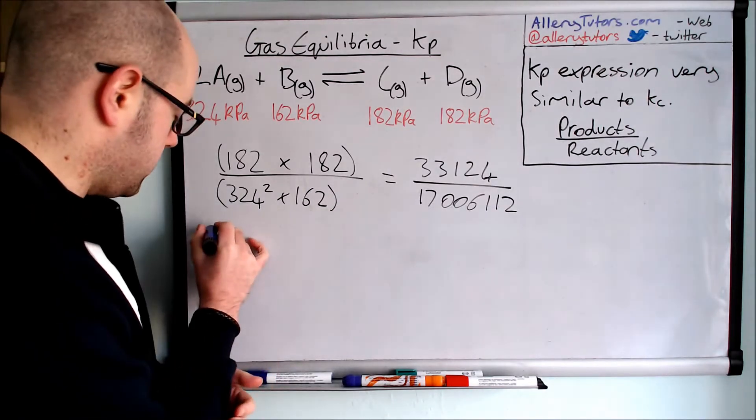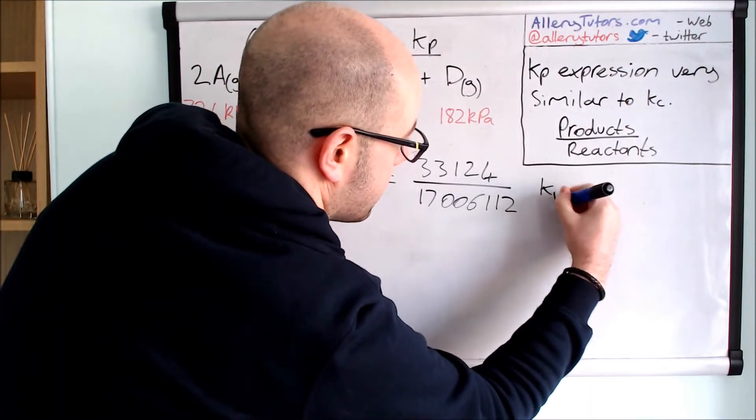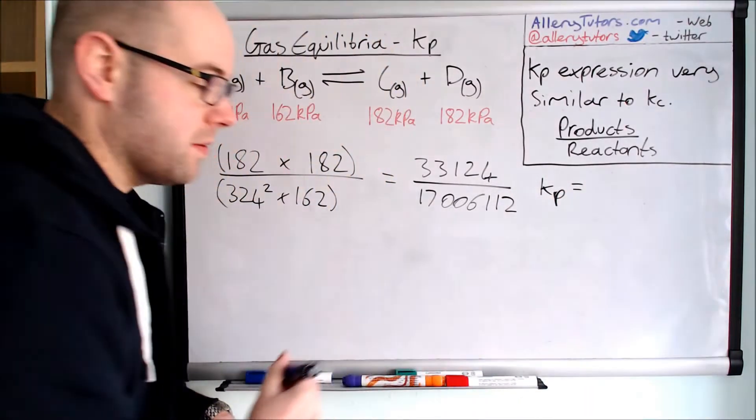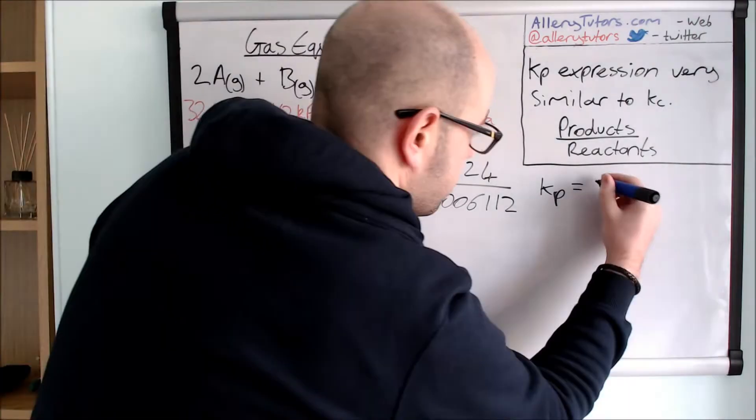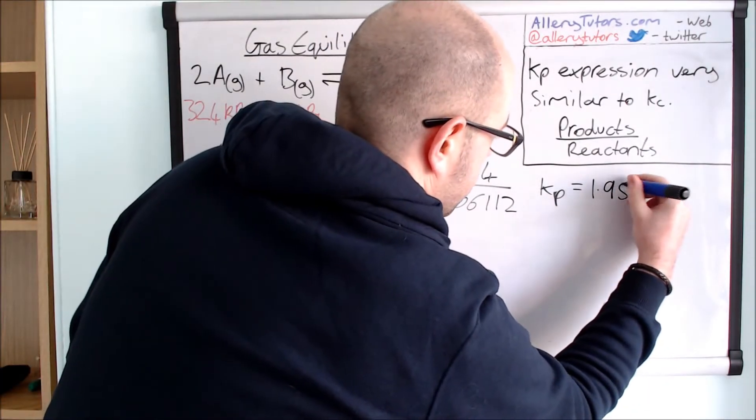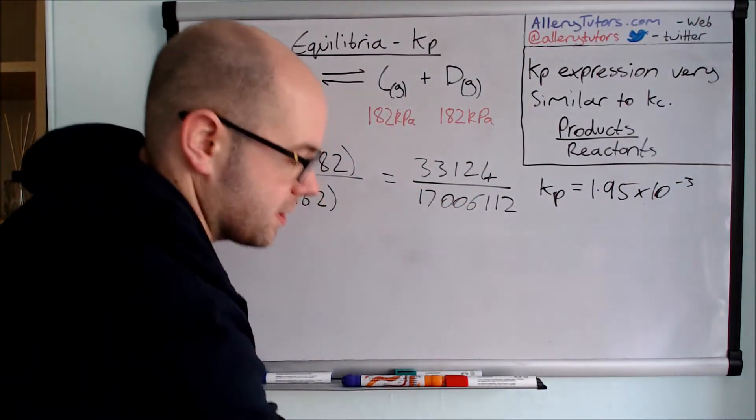Now if we put this into our calculator, our value of KP should come out to be 1.95. If we do it to two decimal places, 1.95 times by 10 to the minus 3. That's nice and simple.